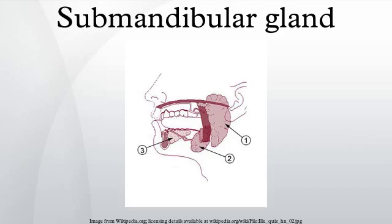The submandibular salivary glands develop later than the parotid glands and appear late in the sixth week of prenatal development. They develop bilaterally from epithelial buds in the sulcus surrounding the sublingual folds on the floor of the primitive mouth. Solid cords branch from the buds and grow posteriorly, lateral to the developing tongue. The cords of the submandibular gland later branch further and then become canalized to form the ductal part.